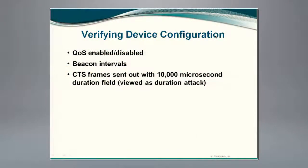Next, it's about verifying device configuration — maybe looking for whether quality of service is enabled or disabled, looking at things like beacon intervals to verify configuration, and looking at some other specific frames like clear-to-send frames, because sometimes they can be manipulated and there may be configuration problems there. Specifically, a common problem is when CTS frames are found with the wrong durations set, and they can be viewed as a duration attack. Let's take a second looking at those.